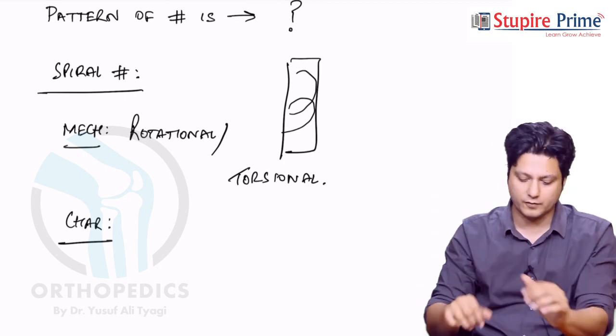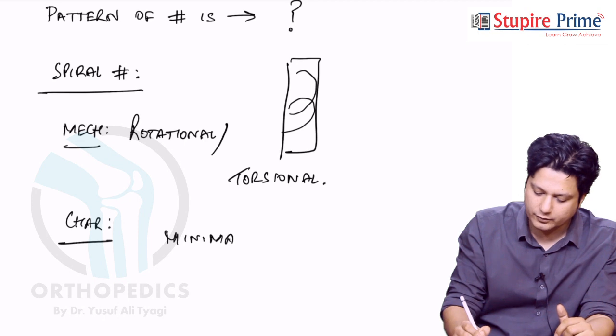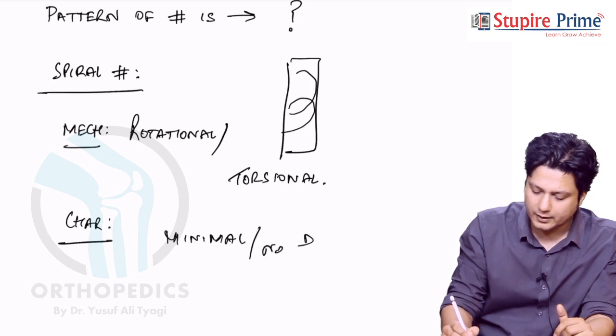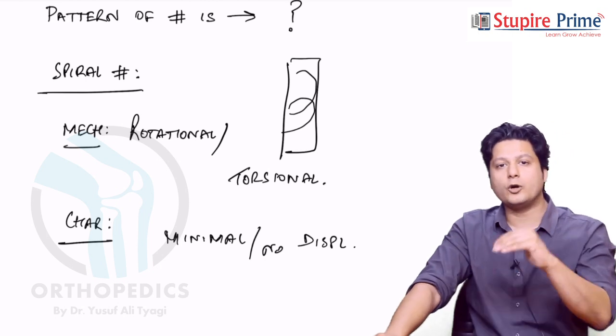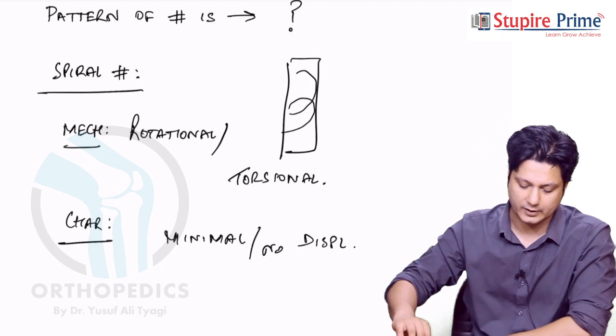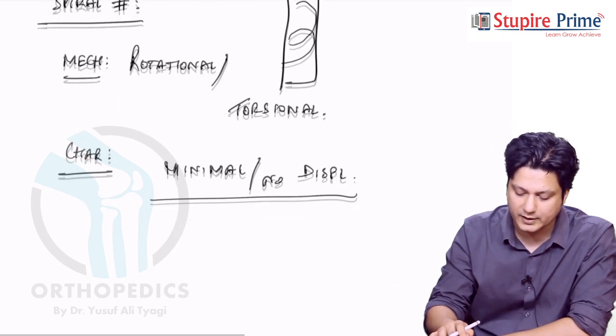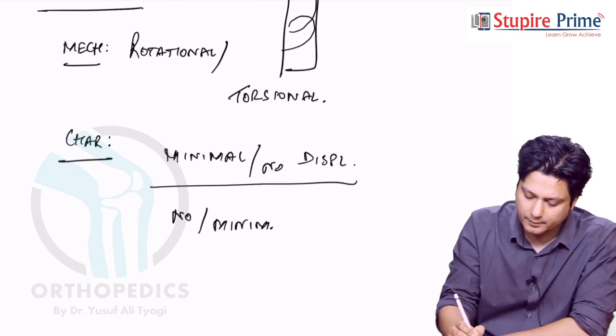So overall in a spiral fracture, there is minimal or no displacement at the site of the fracture. No displacement. And this is the reason why the limb is not going to have the obvious deformity because of no or minimal displacement. So because there is no or minimal displacement at the site of fracture, there will be no or minimal deformity in the limb.